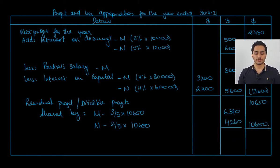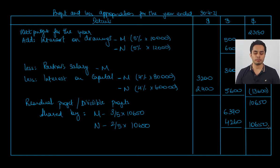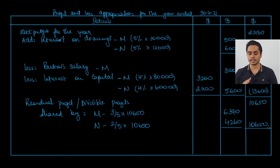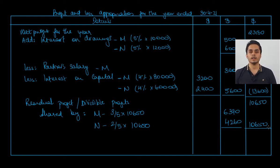The final share of profit by the partners is 6,390 for M and 4,260 for N.